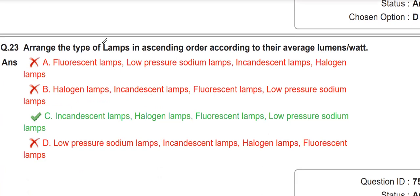Arrange the types of lamps in ascending order according to average lumens per watt. The order is: incandescent lamp, halogen lamp, fluorescent lamp, and low-pressure sodium lamp — this is the ascending order of average lumens per watt.